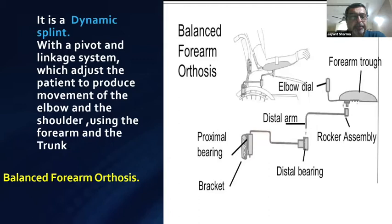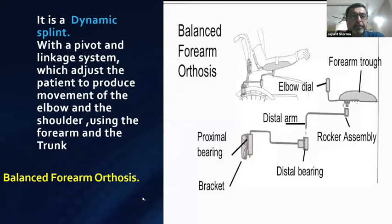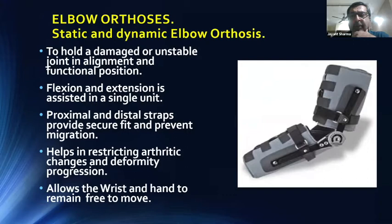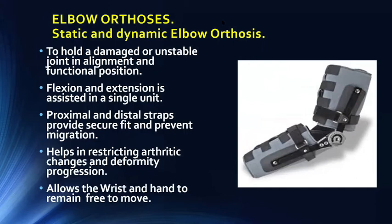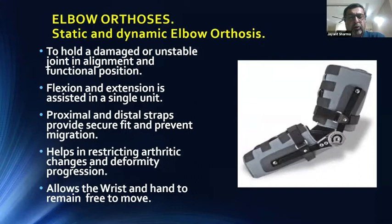The dynamic splint for the upper limb is the balanced forearm orthosis, which has a pivot and linkage system allowing the patient to produce movement of the elbow and shoulder using forearm and trunk as muscle force. The elbow orthosis, either static or dynamic, holds the damaged unstable joint in alignment and functional position. Flexion and extension are assisted in a single unit; proximal and distal straps provide a secure fit, prevent migration, restrict arthritic changes and deformity, and allow the wrist and hand to move freely.